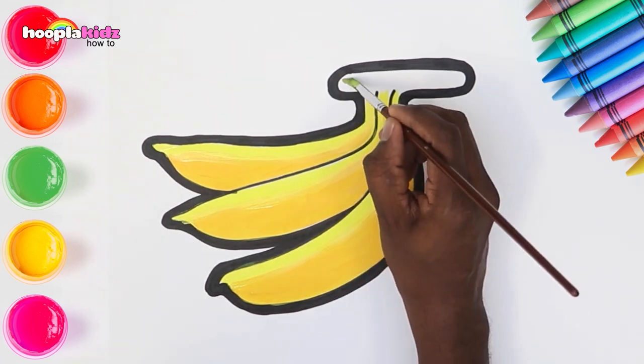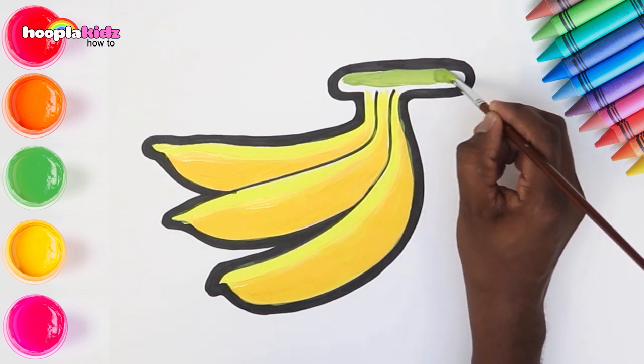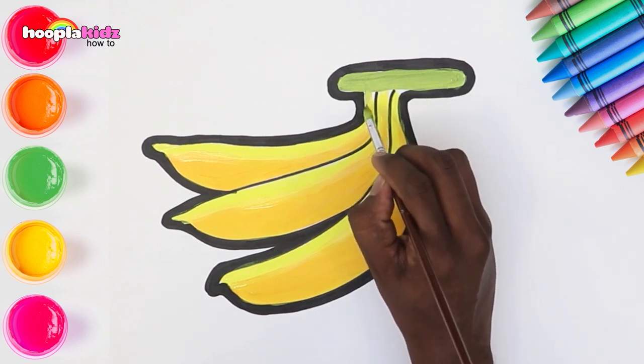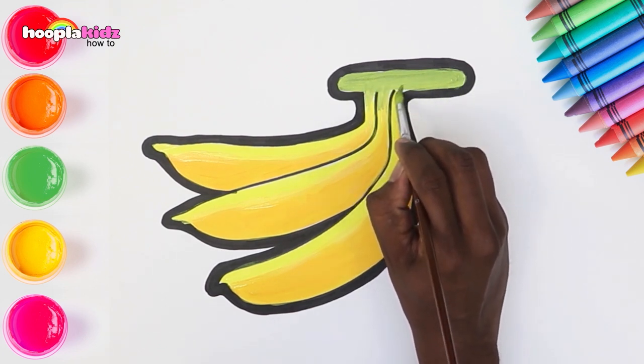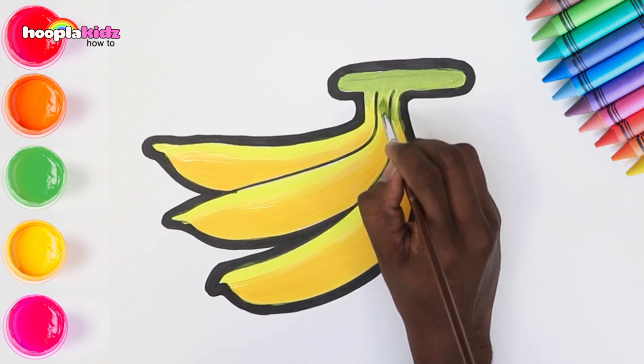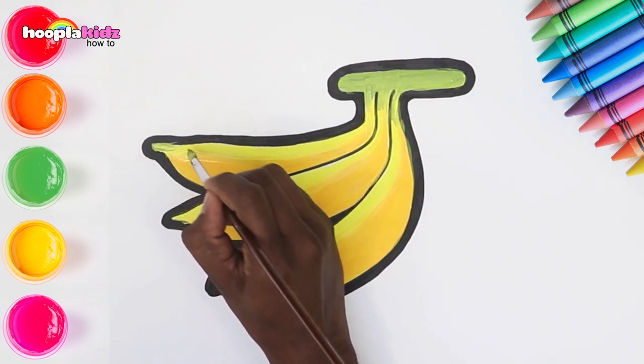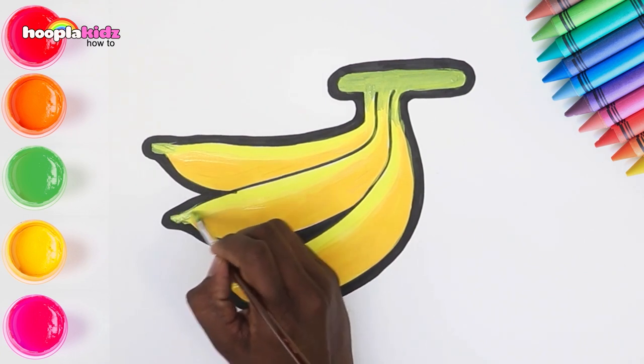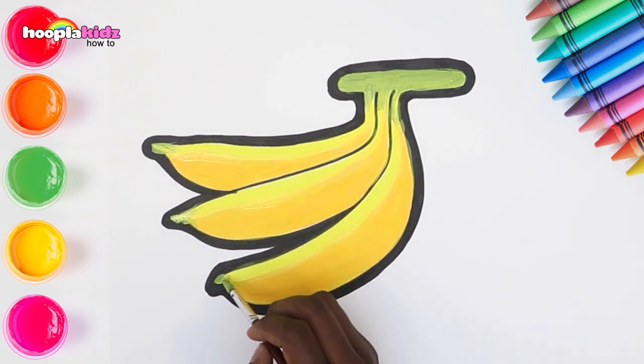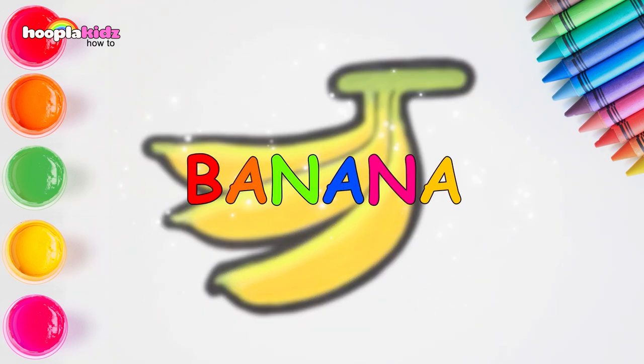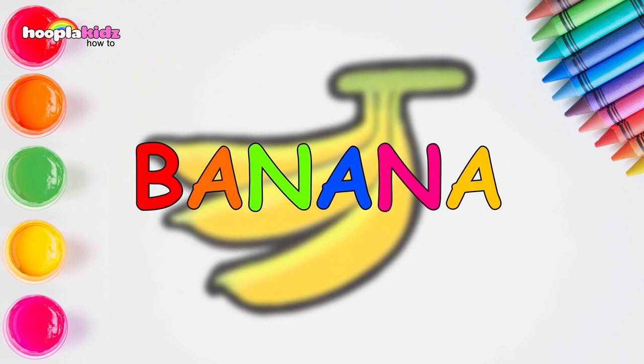Let's use olive green for the stem of the banana. Color the tips of the banana with an olive green too! Wow! This is making me hungry! Good thing we're done! Our bananas are now ready!